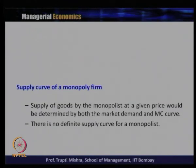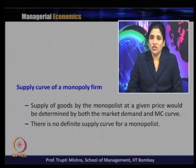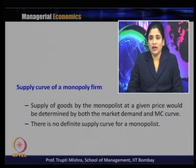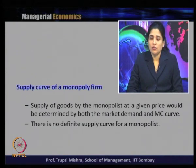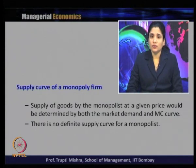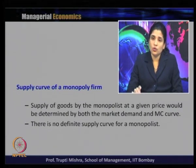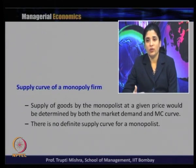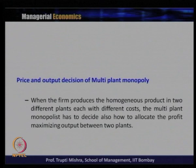The supply of goods by the monopolist at a given price is determined by both market demand and the marginal cost curve, so there is no definite supply curve for a monopolist. Since the monopolist is a single seller, they always look for a price which goes above the marginal cost so that they can maximize revenue and profit.